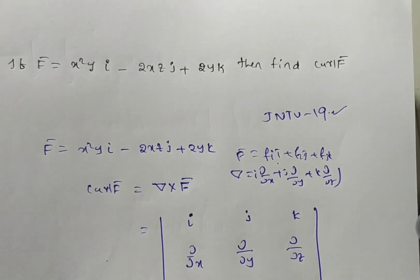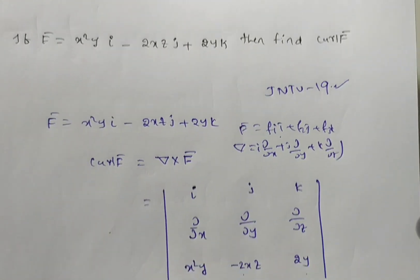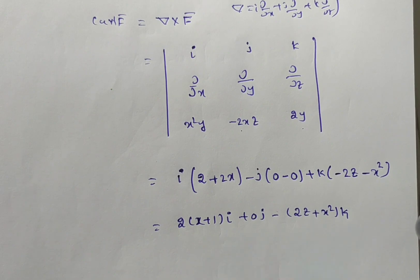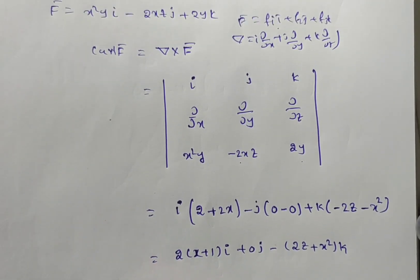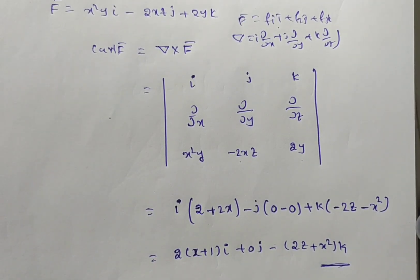If suppose they are asking this problem at any point 1, 2, 3, then you have to replace x by 1, y by 2, z by 3. So they are not given anything, so directly this is the answer. Is it clear for everyone?